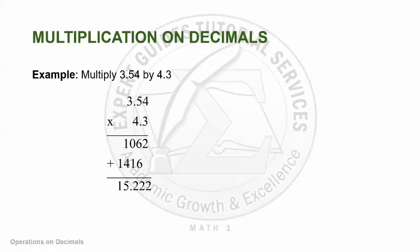Note also that this applies even if one of your factors is a decimal and the other is not. For example, multiplying 3.54 times 43 — you just align to the right-most side, multiply as is, and then count the decimal places. As long as there is one decimal number among your factors, your answer will always be a decimal number, and you count the decimal places of your factors to get the final product.